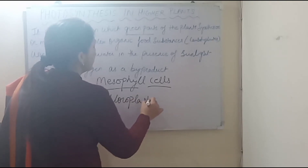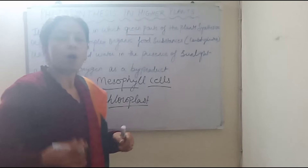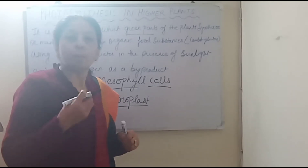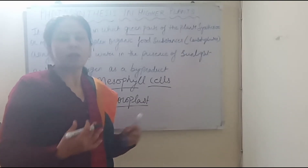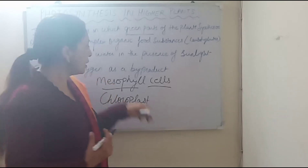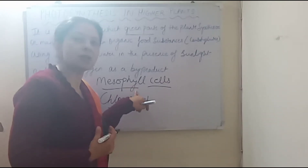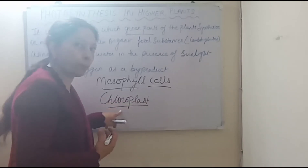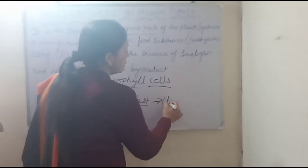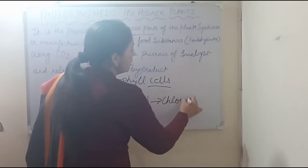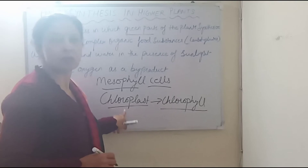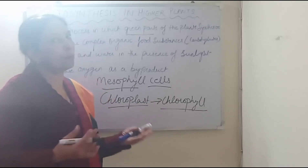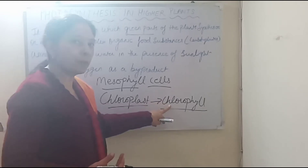The organelle is the chloroplast, and many chloroplasts are present in the mesophyll cells. Inside those chloroplasts, the name of the pigment is chlorophyll. So children, sometimes we are confused about what is chloroplast and what is chlorophyll. Basically, in the green part of the mesophyll cells, there are many chloroplasts present, and inside the chloroplast there is a pigment called chlorophyll. Chloroplast is an organelle present in plants that carries out photosynthesis, and chlorophyll is the pigment inside it.